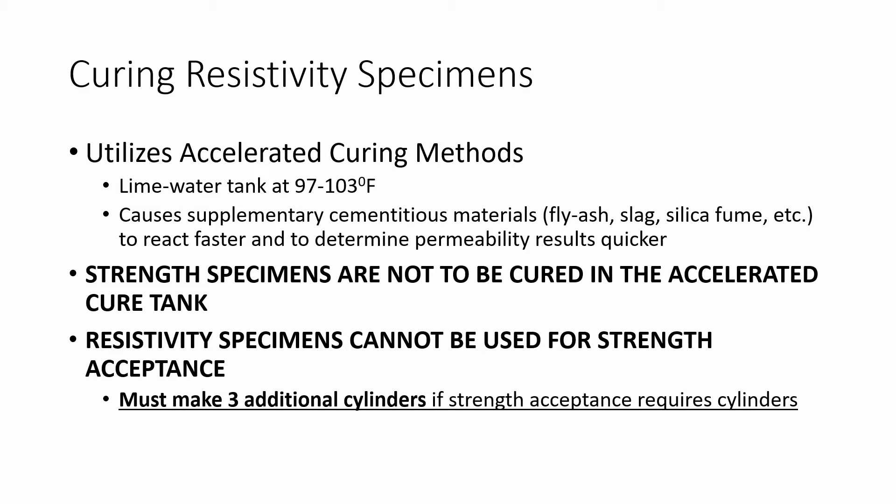There is a different curing procedure for concrete specimens coming in from the field. Resistivity specimens will be utilizing the accelerated cure method. The method still uses lime water at similar concentrations, but at an elevated temperature. The temperature range for the tank needs to be between 97 to 103 degrees Fahrenheit. The reason we are adopting accelerated curing is to account for any supplementary cementitious materials like fly ash, slag, silica fume, or other mineral admixtures.